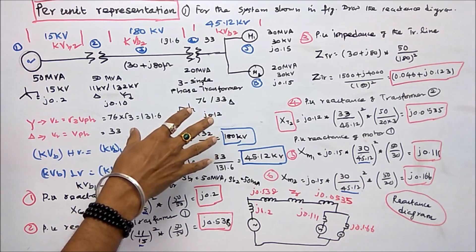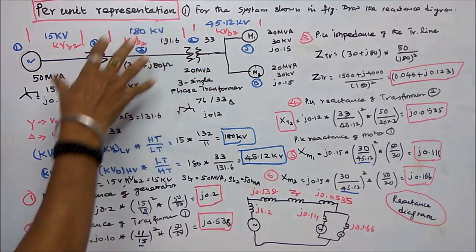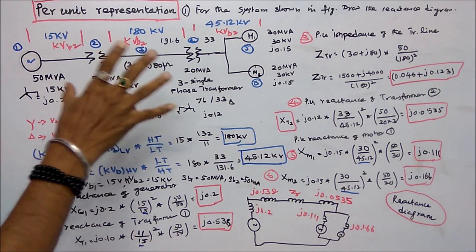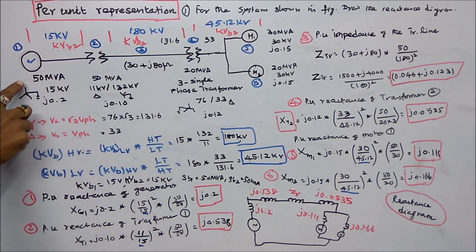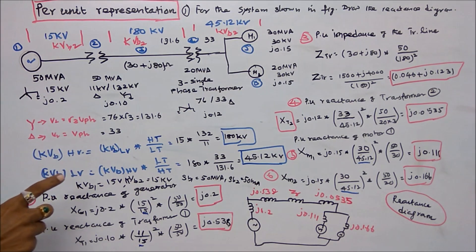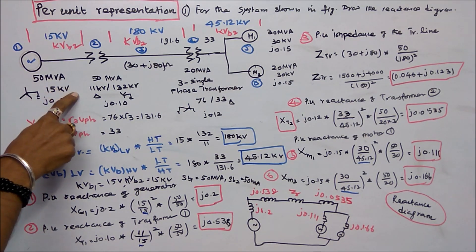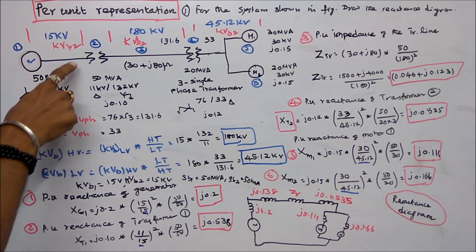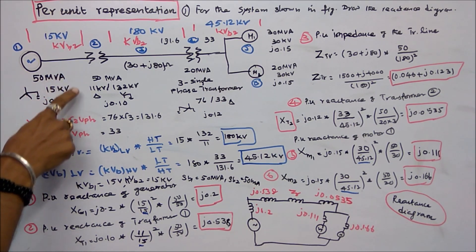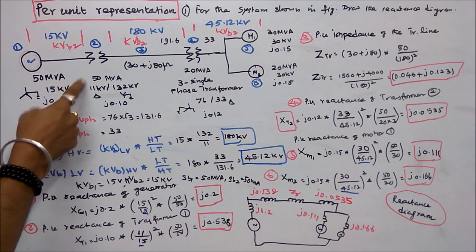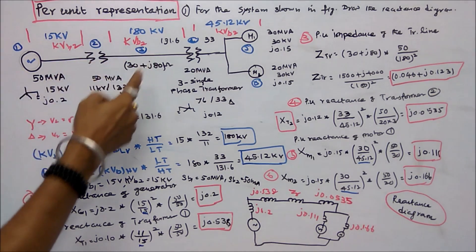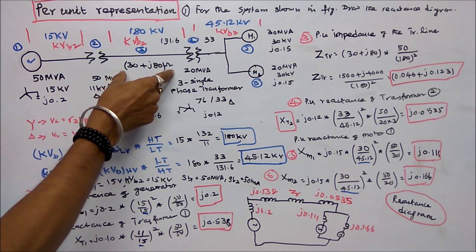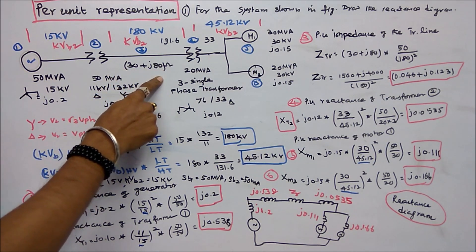Problem 2: For the system shown in figure, draw the reactance diagram. The system consists of six components. One is a generator with rating 50 MVA and voltage 15 kV, subtransient reactance J0.2. Second is a transformer with rating 50 MVA, primary 11 kV delta, secondary 132 kV star. Third is a transmission line with impedance 30 plus J80 ohms.